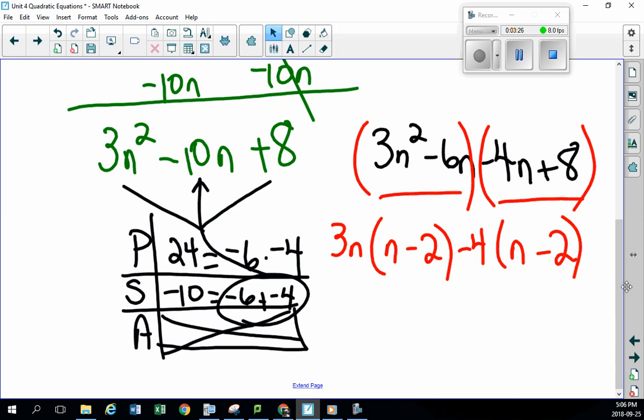And check this out. This works out to be, oh, there it is, n minus 2 and, of course, 3n minus 4.